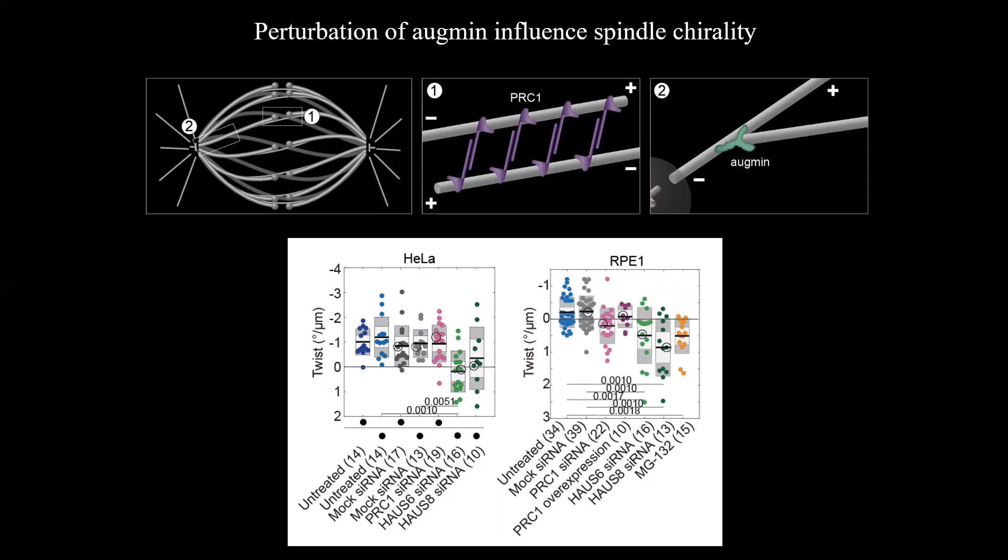While depletion of PRC1 did not significantly change spindle twist, depletion of augmin subunits yielded interesting results. After depletion of HAUS6 subunit of augmin complex, the spindles in HeLa cells had zero twist on average, whereas those in RPE1 cells had right-handed twist. A similar result was observed after the depletion of the augmin subunit HAUS8. This resulted in zero average twist in HeLa cells and a strong right-handed twist in RPE1 cells.